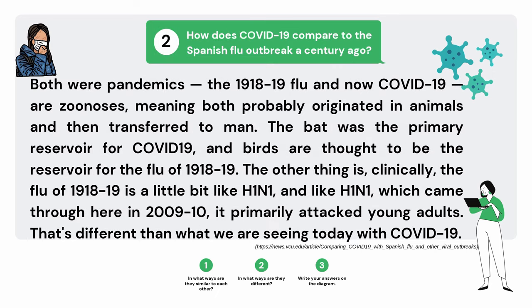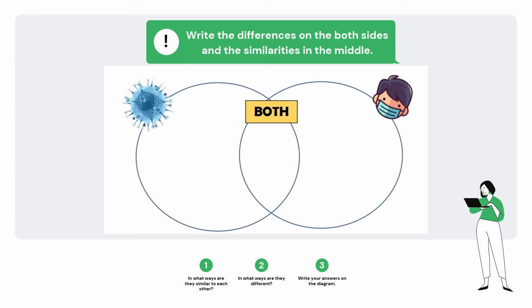How does COVID-19 compare to the Spanish flu outbreak a century ago? Both were pandemics — the 1918 to 1919 flu and now COVID-19. They are zoonoses, meaning both probably originated in animals and then transferred to man. The bat was the primary reservoir for COVID-19, and birds are thought to be the reservoir for the flu of 1918 to 1919. The flu of 1918 to 1919 primarily attacked young adults, which is different from what we are seeing today with COVID-19. The differences are on both sides and the similarities in the middle of the diagram. On the left side is for COVID-19 and on the right side is for the Spanish flu.